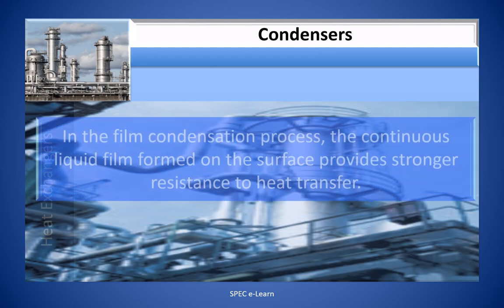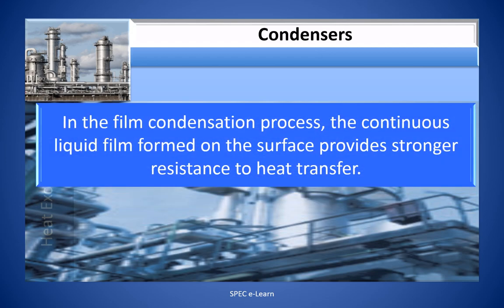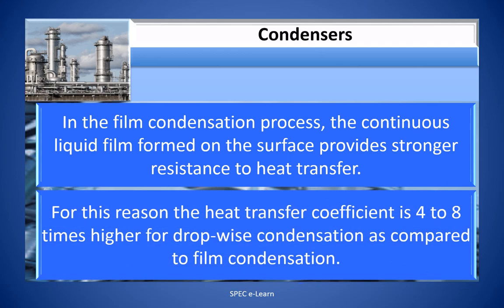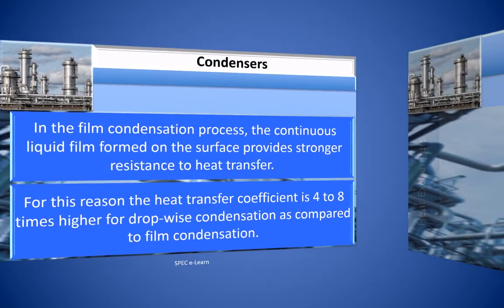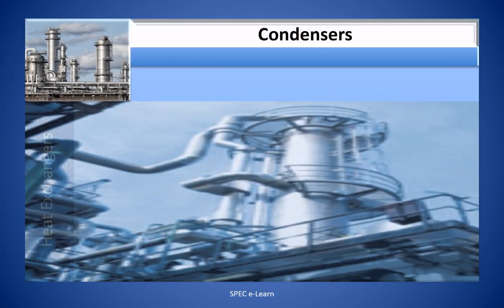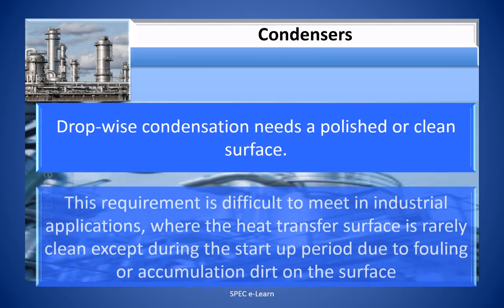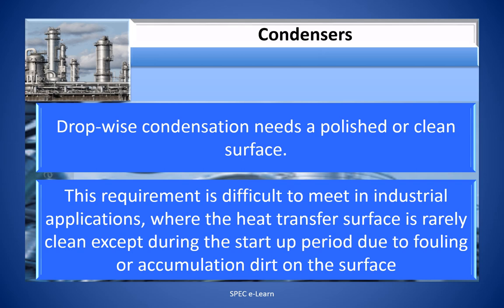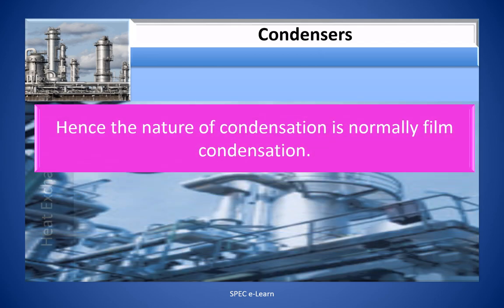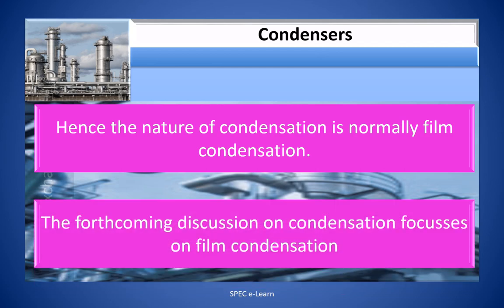In film condensation, the continuous liquid film formed on the surface provides stronger resistance to heat transfer. For this reason, the heat transfer coefficient is 4 to 8 times higher for drop-wise condensation compared to film condensation. However, drop-wise condensation requires a polished or clean surface — a requirement difficult to meet in industrial applications where the heat transfer surface is rarely clean due to fouling. Hence, the nature of condensation in practice is normally film condensation, and the forthcoming discussion focuses on film condensation.